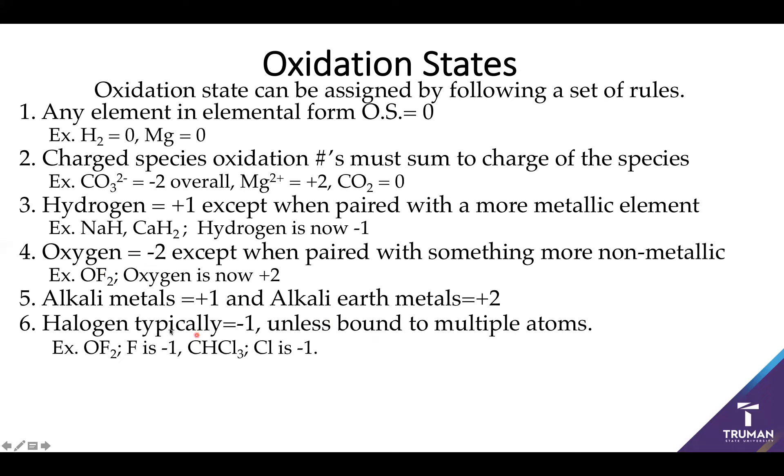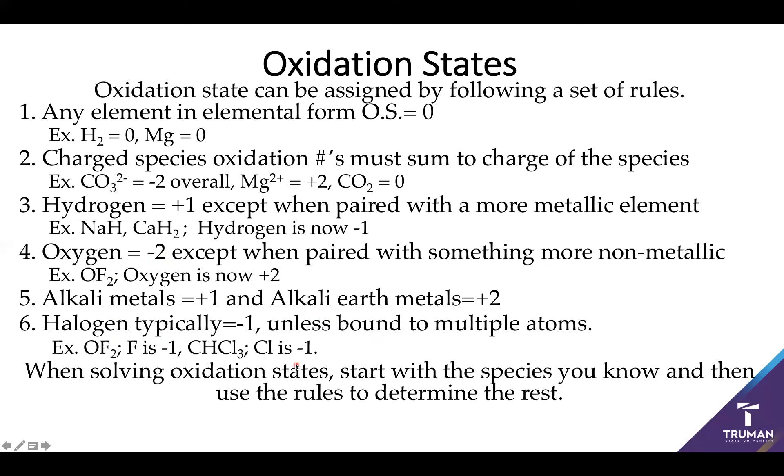So this gives you a set of atoms that you can usually use as a reference point. From here, what you can then do is start by solving your oxidation states. Figure out which species you know. Mainly, start with your hydrogen, then your oxygen, then your alkalis and your halogens. And then anything else, like a metal or carbon or nitrogen, usually you can figure out by knowing these five species.